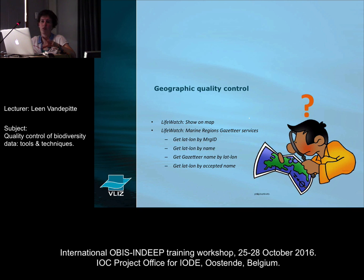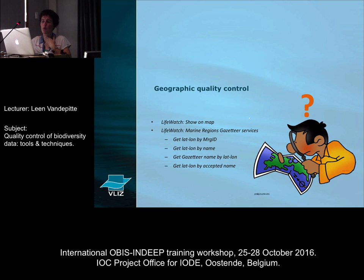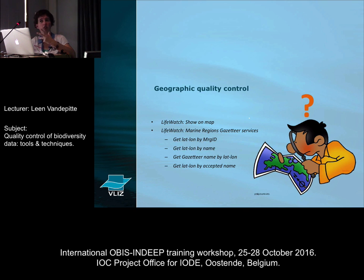Taxonomy will take up a big part of the actual quality control that you need to do. What else are we offering through services is geographic quality control. LifeWatch gives you several options. The first and most convenient one is 'show on map' — you just upload the coordinates that you received and the system just puts them on a map, and right away visually you can see whether the locations are marine or not.